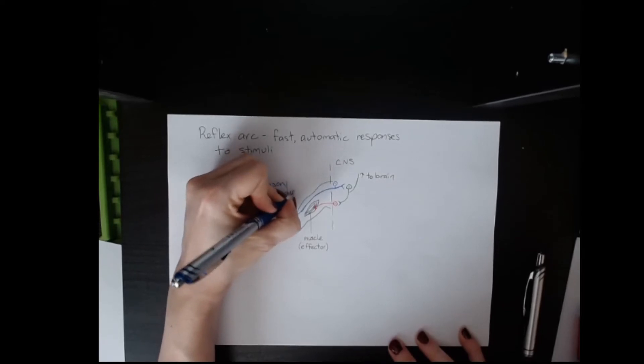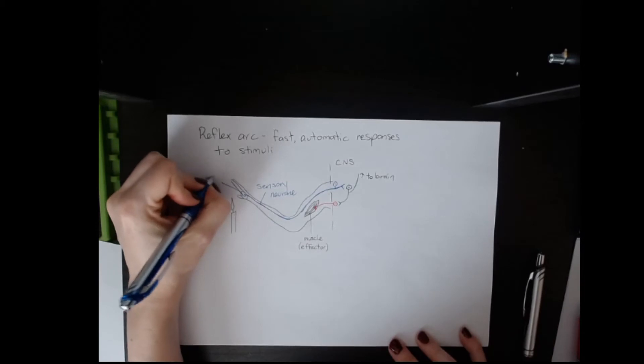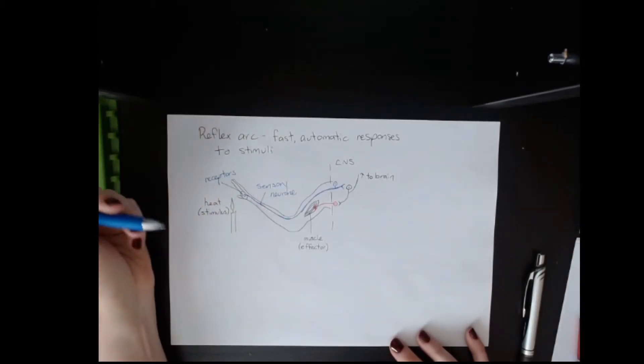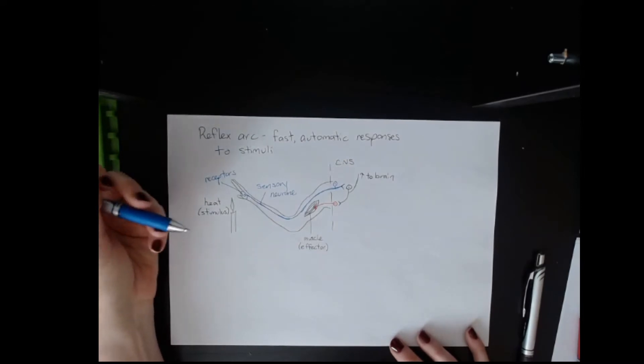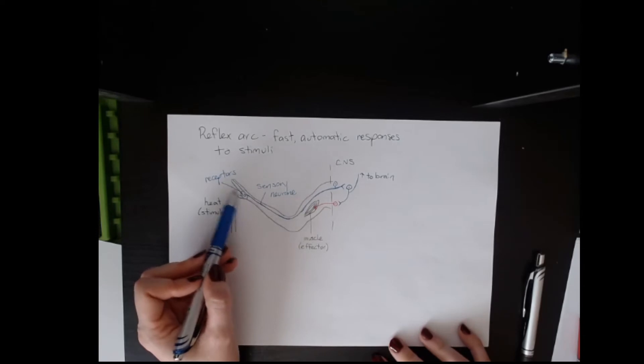The sensory neuron has here in the skin receptors - you can have different types of receptors: heat receptors, pressure receptors, temperature receptors, pain receptors. This one would be a heat receptor. That impulse generates an impulse in the sensory neuron and it's carried through the sensory neuron.